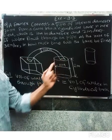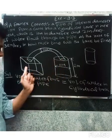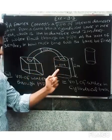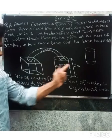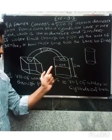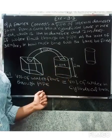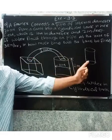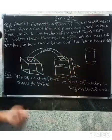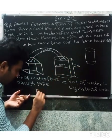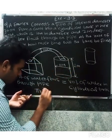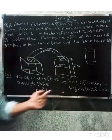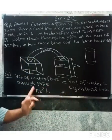The volume of water flowing in the pipe is equal to the volume needed to fill the tank. Both the pipe and the tank are cylindrical shapes, so we use the formula pi r squared h for both cylinders.